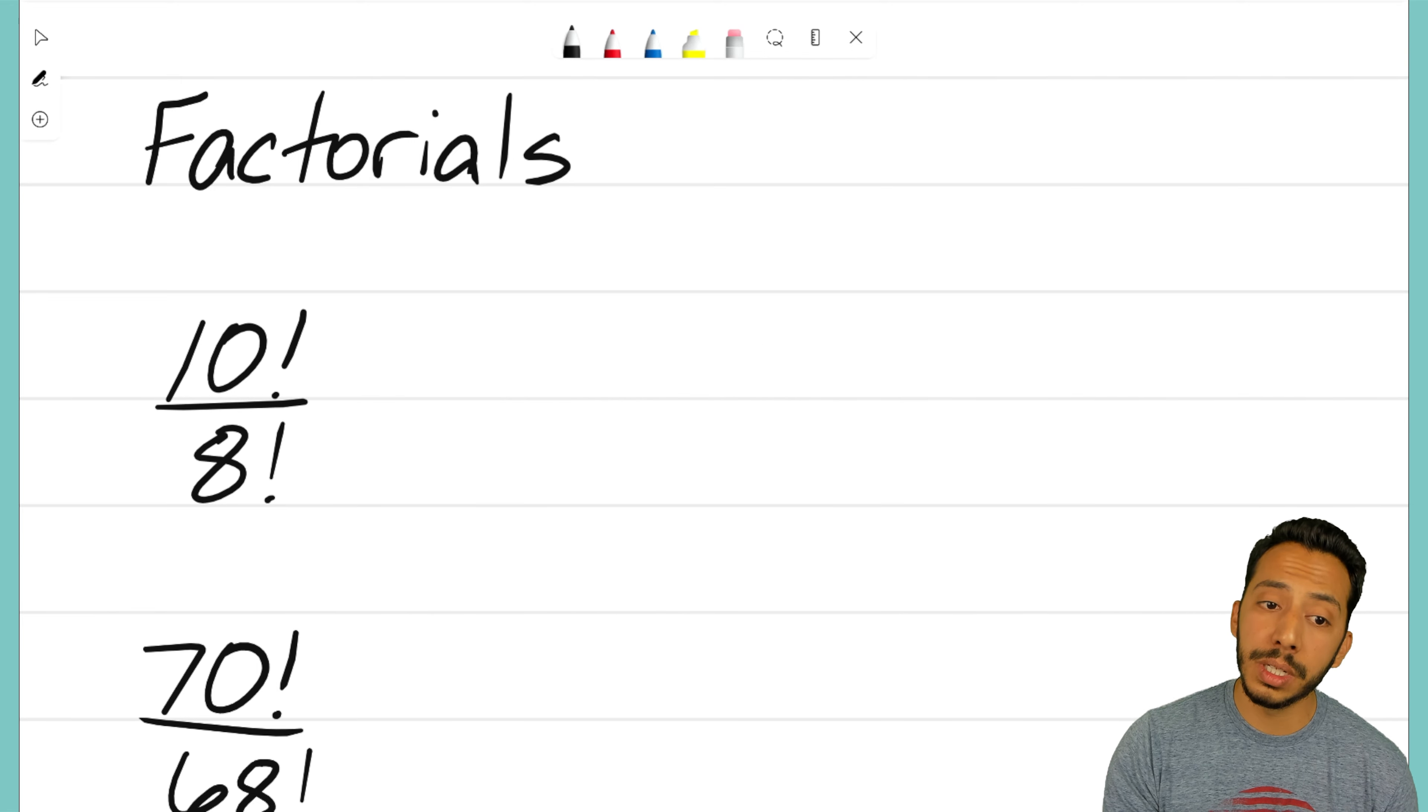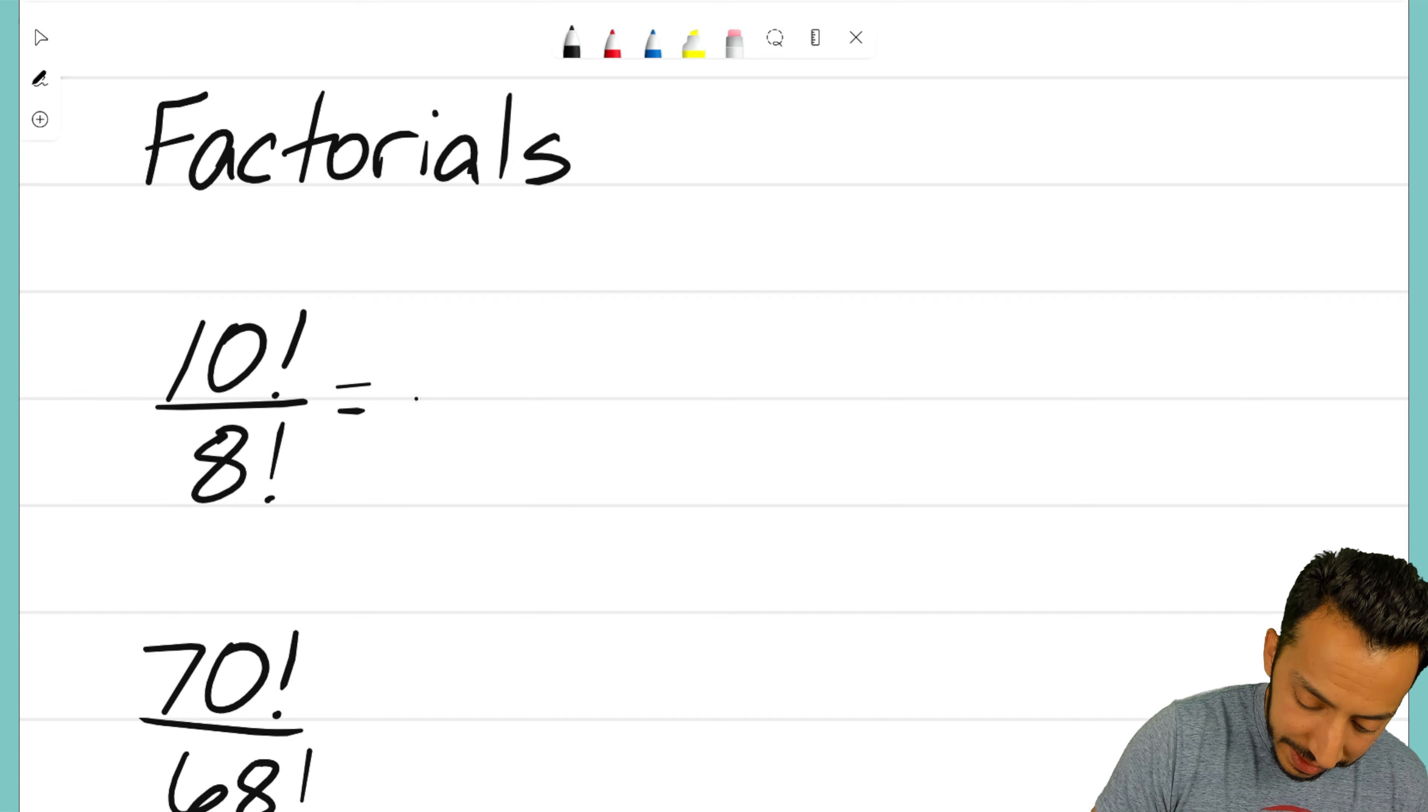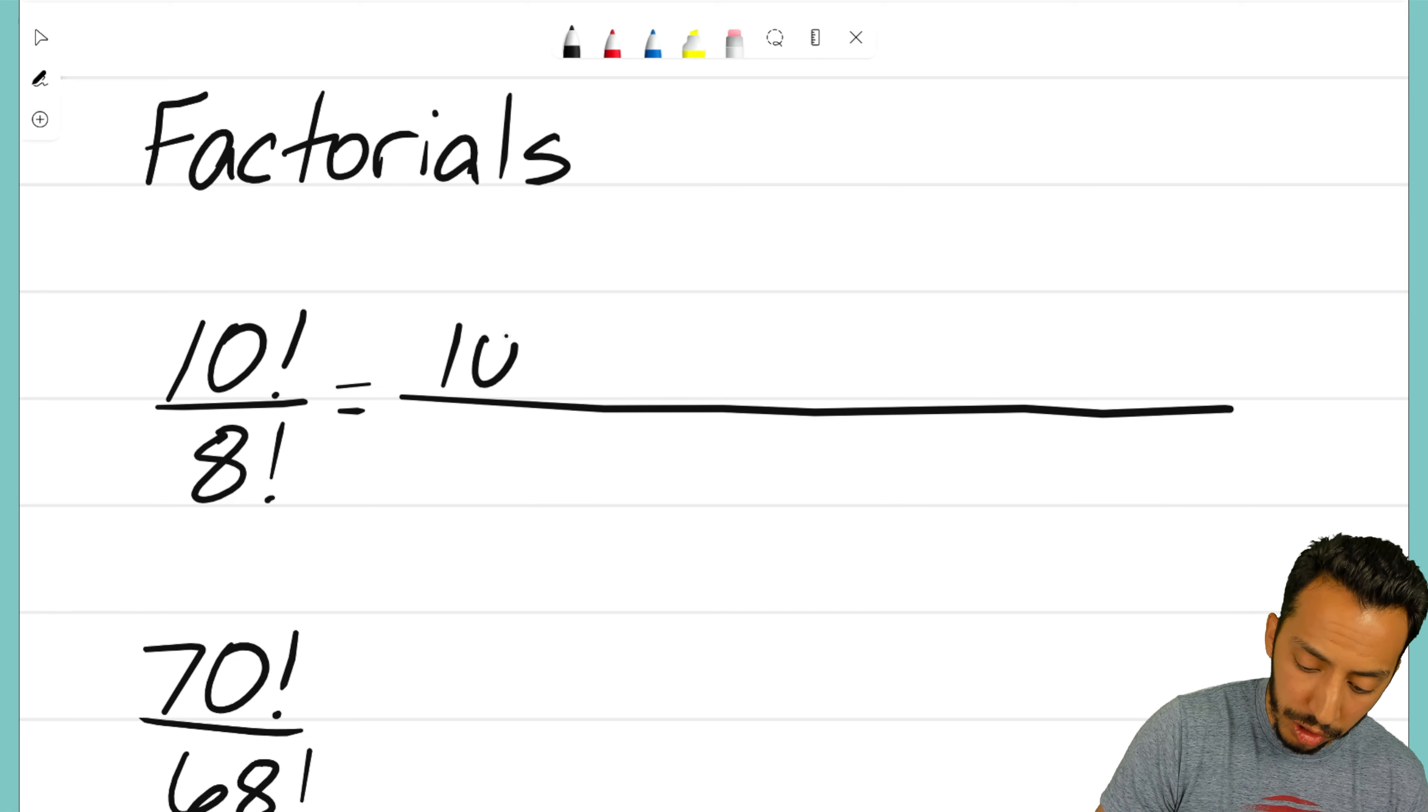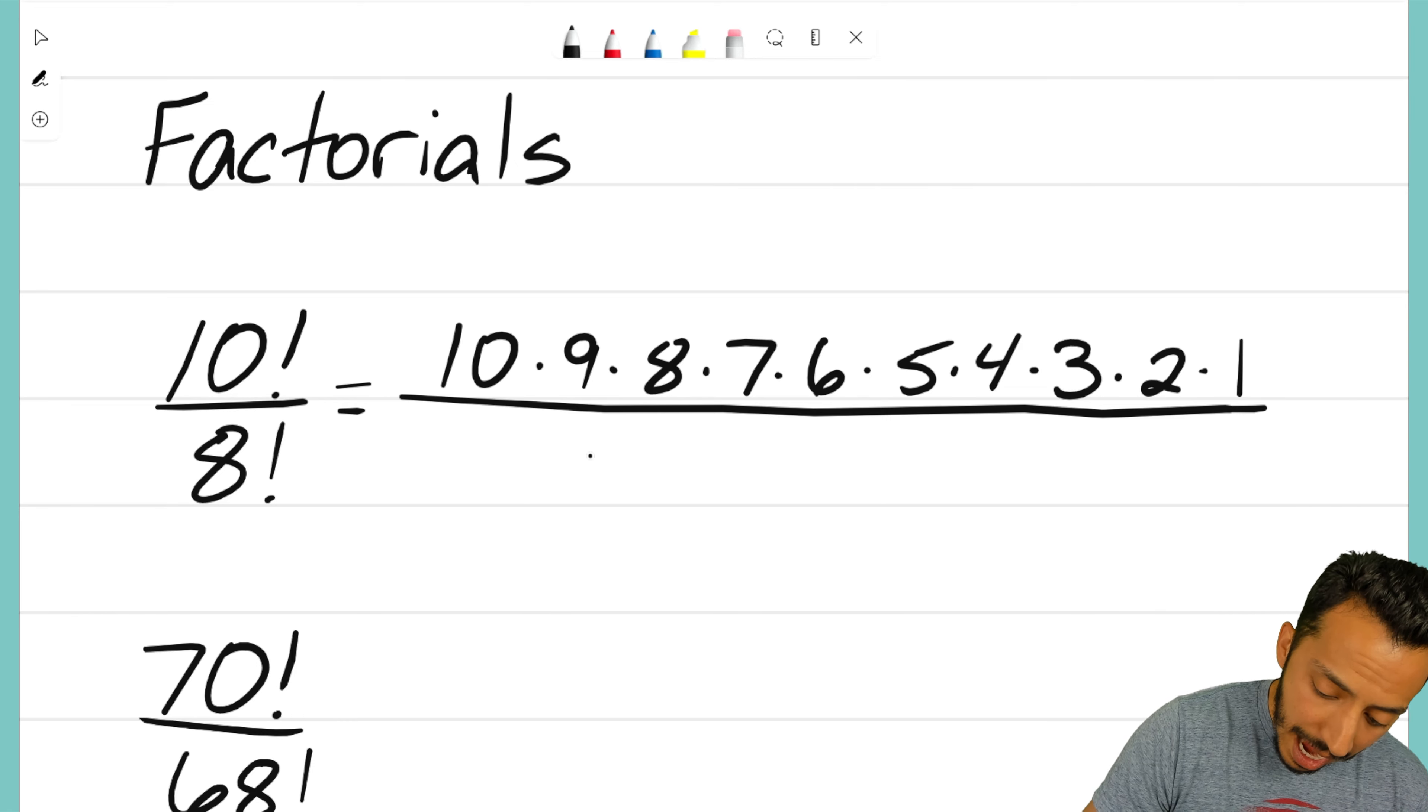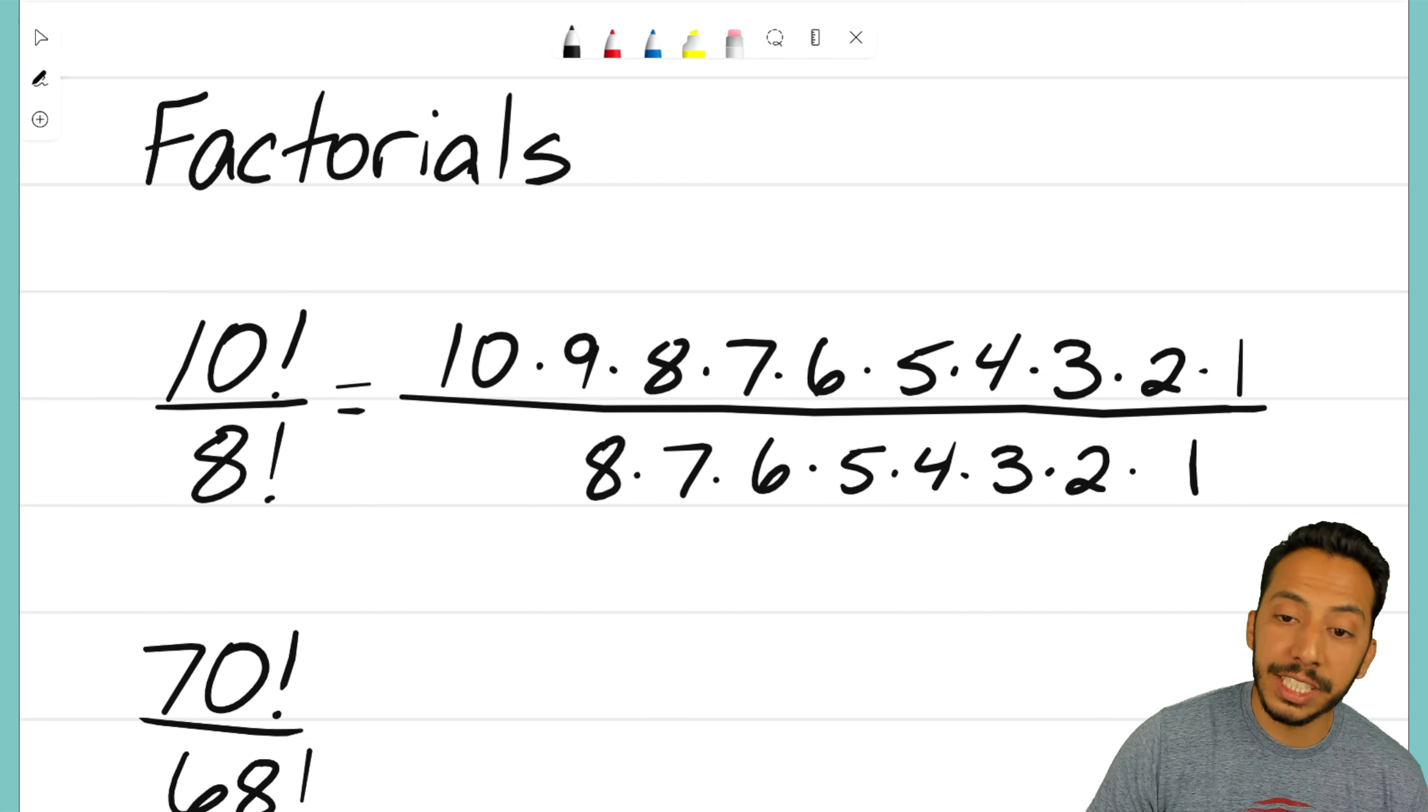Actually this is going to simplify much differently. What we want to do is expand the factorial out—show what is 10 factorial and what is 8 factorial so we can understand what's going on. On top, 10 factorial is just 10 times 9 times 8 times 7 times 6 times 5 times 4 all the way down to 1. On the bottom, I need to write out 8 factorial which is 8 times 7 times 6 all the way down to 1.